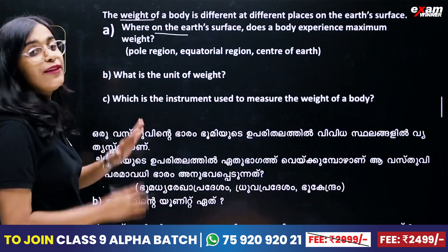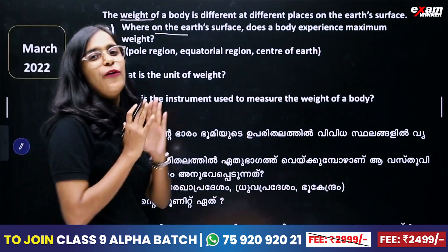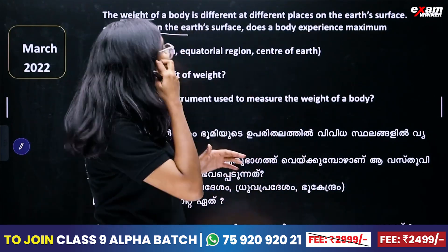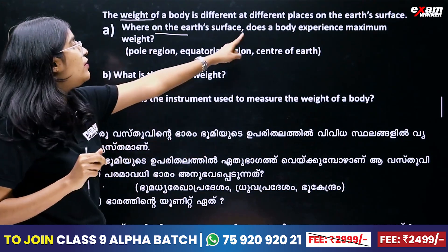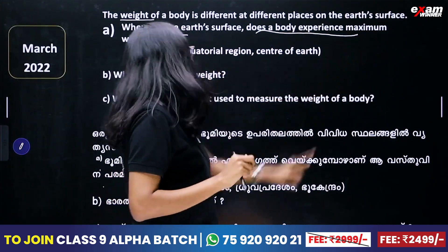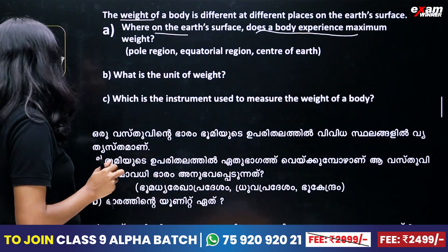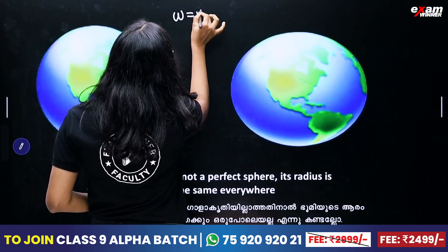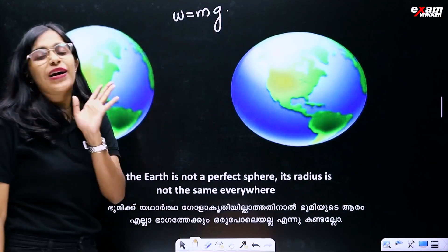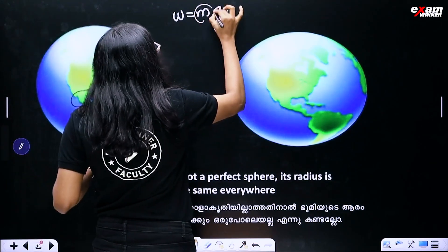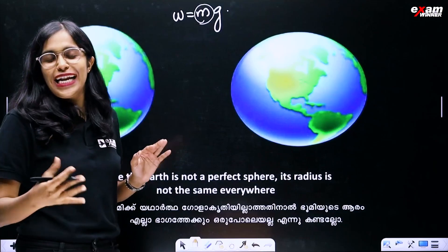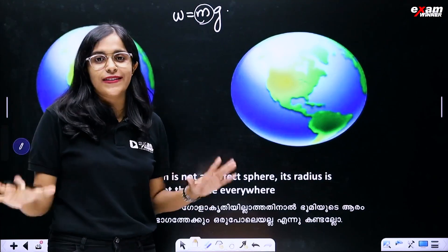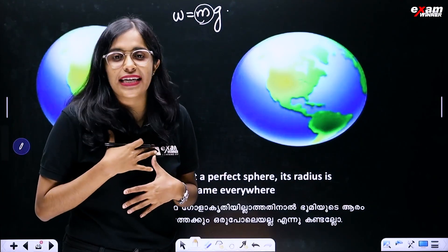What is the weight of a body? The weight of a body is different at different places. It changes, but mass is constant — it is always constant. Mass is the amount of matter contained in a body.